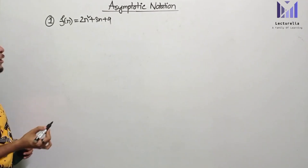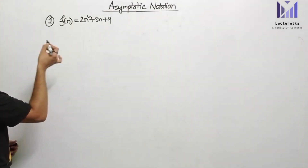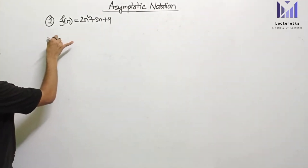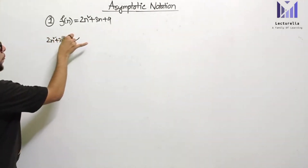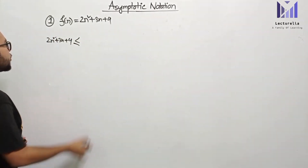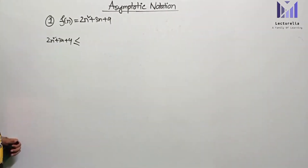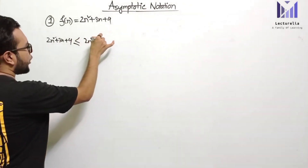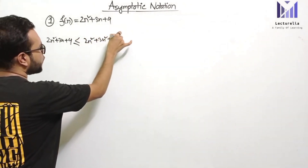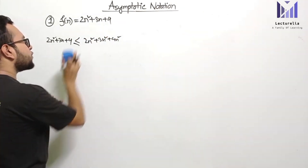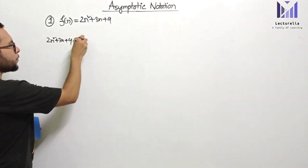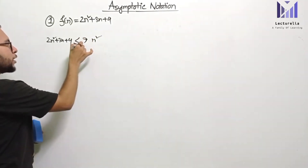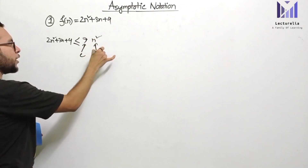So for this notation, f(n) = 2n² + 3n + 4. We need to find g(n) such that 2n² + 3n + 4 is less than or equal to c into g(n). By examining this function of n, we can determine the appropriate g(n) value.